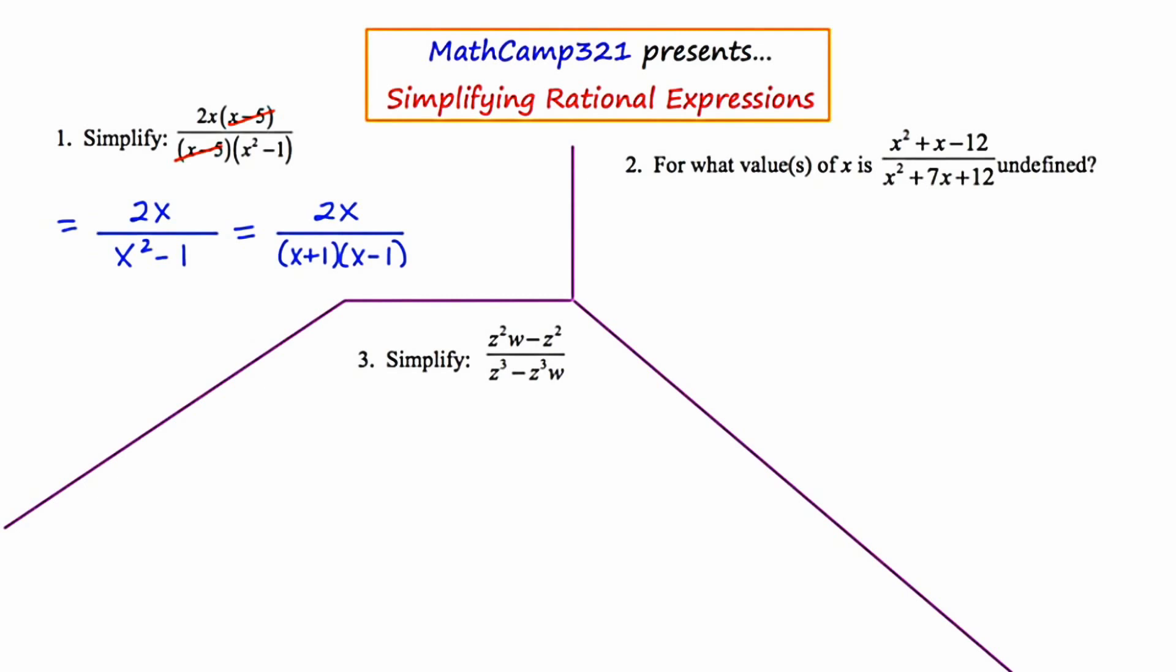Now in question number 2, it says, for what value or values of x is this rational expression undefined? So what this question is really asking is, for which values of x will the denominator be 0? Denominator equaling 0 means undefined.